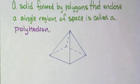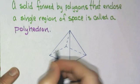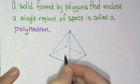And the first word is a polyhedron. A polyhedron is a solid formed by polygons that enclose a single region of space. And right now I have drawn a pyramid here. This pyramid looks like a square pyramid, and it is made up of polygons—squares and triangles.